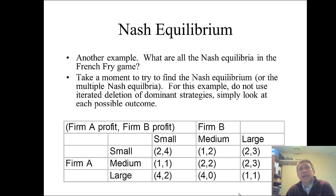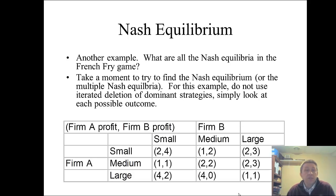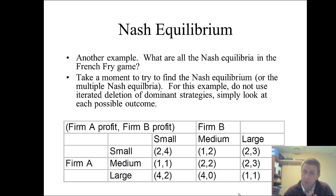The second game I want you to work through prior to coming to class is the french fry game. Before, you used iterated deletion of dominated strategies to find the outcome. Now I want you to look for the Nash equilibrium — or multiple Nash equilibria — without iterated deletion. Look at every possible outcome to see whether firm A or firm B wants to change their choice. If you find an outcome where they're both content staying right where they are, you've found a Nash equilibrium. We'll go through both exercises together in our next class period.